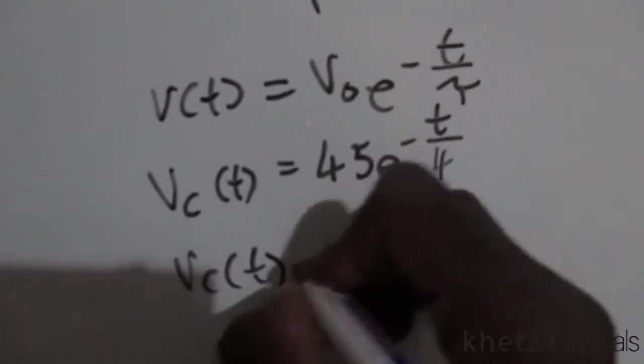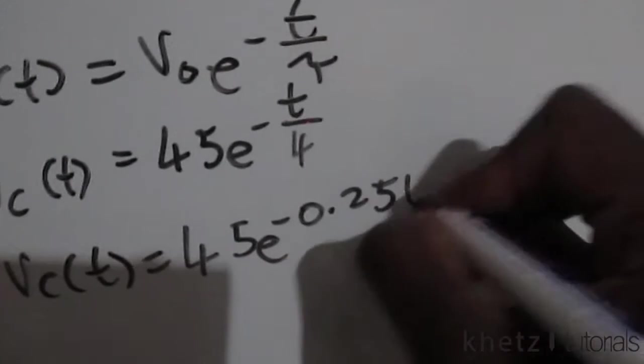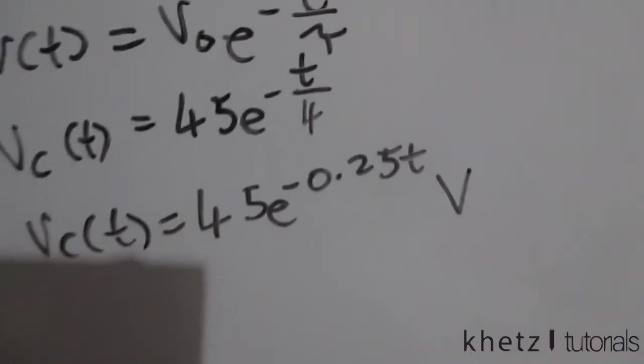To make this compact, we're just going to say 45 e to the negative 0.25t in volts. So that is your Vc(t).